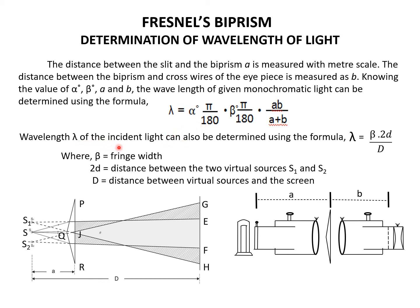In general, the wavelength of light is determined using the formula lambda = beta × 2d / D, where beta is the fringe width, 2d is the distance between two coherent sources, and D is the distance between the source and screen. This is the general formula for the determination of wavelength in case of an interference fringe pattern. For a biprism specifically, the formula is lambda = (alpha × π/180) × (beta × π/180) × AB / (A + B).